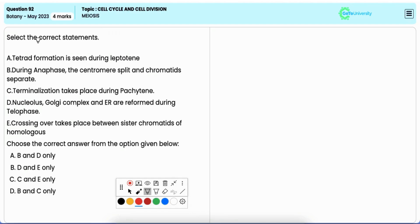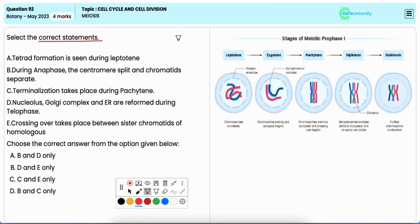In this question you have to choose the option that includes the correct statement regarding meiosis. Statement A: tetrad formation is seen in leptotene. It is incorrect. Tetrad formation occurs during the zygotene stage of prophase one of meiosis when homologous chromosomes pair up.